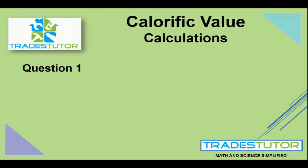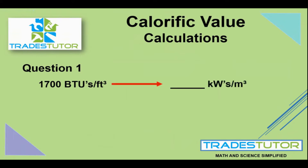Question one. The first thing we're going to deal with is 1,700 BTUs per cubic foot. That's the calorific value of a specific gas, and we want to translate it — same gas — to kilowatts per cubic meter. This is going to be a two-part process. Step one: we're going to change the heat energy. I always do the heat energy first.